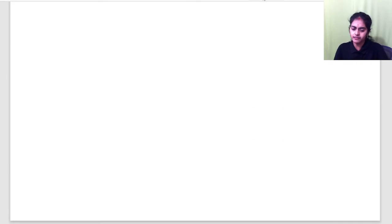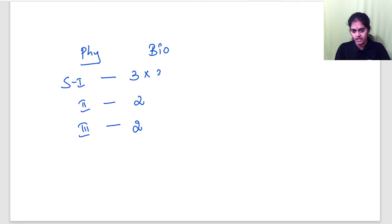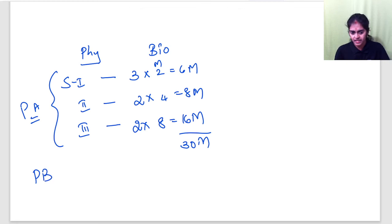Is it clear people? So, what is the pattern for physics and biology, same pattern, physics and bio, you will have section 1, 2 and 3. Section 1, 2 and 3. In section 2, 2 questions you will answer. Section 3, 2 questions you will answer. Section 1, 3 questions you will answer. Each carry 2 marks, so total 6 marks. Each question here carries 4 marks, so total 8 marks. Here, each question carries 8 marks, so total 16 marks. So, total 30 marks here, it is for part A. All this is part A. Now, in part B, you will have 10 questions. 10 questions, each question carries 1 mark, so total 10 marks. So, total 40 marks per physics, 40 for biology. So this is the pattern.